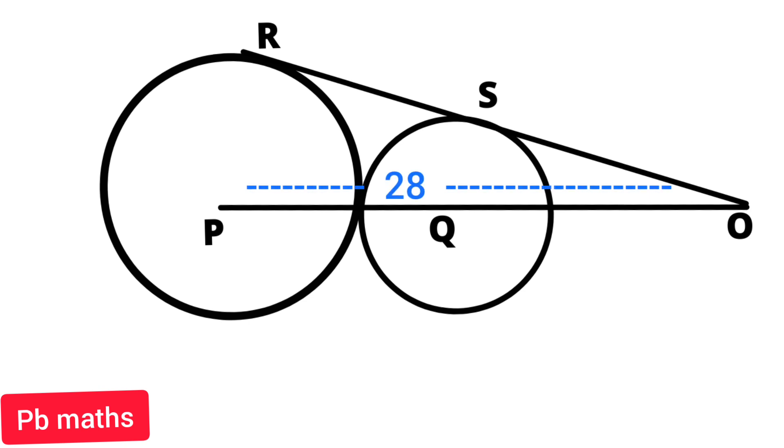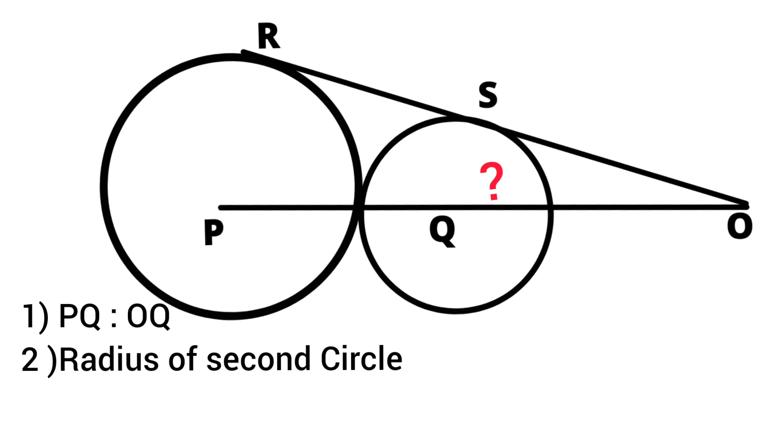We need to find out PQ is to OQ, that is the ratio of PQ and OQ. That is the first question. In the second question, we need to find out the radius of the second circle. In the third question, we need to find out the length of SO.